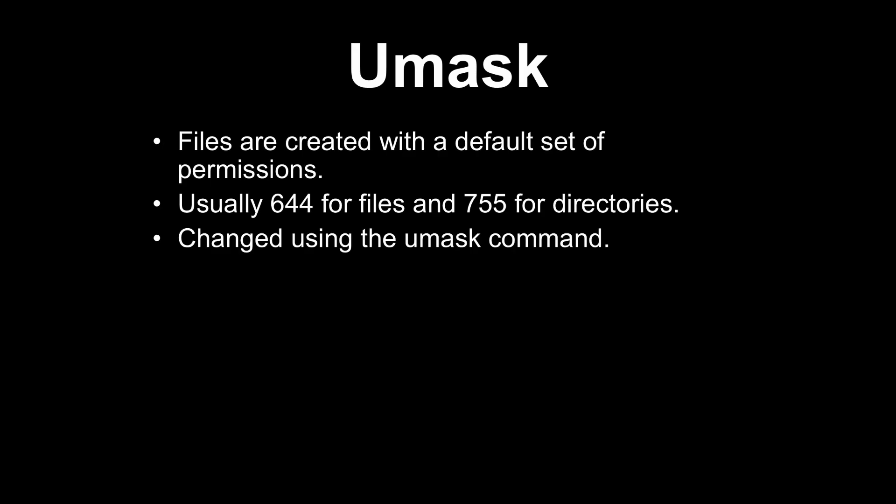Each file on your system has what's called a umask, which is the default set of file permissions when you create a new file. On many systems, if you create a plain text file using the touch command, those files might come up as permissions 664. Six means the owner can read and write the file, and four means all groups and other users can only read the file. Most directories come up as default permissions 755. There is a command called umask that you can use to modify these defaults.